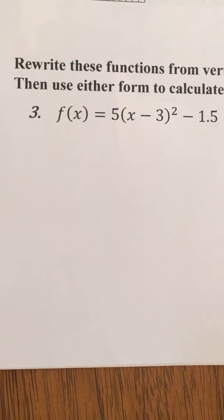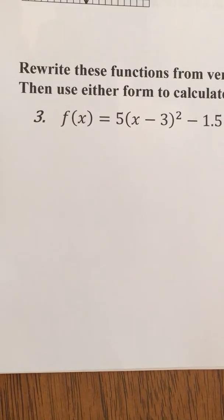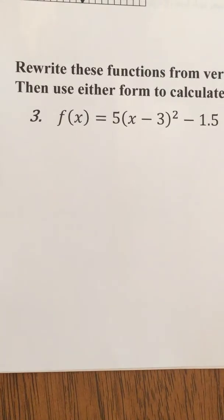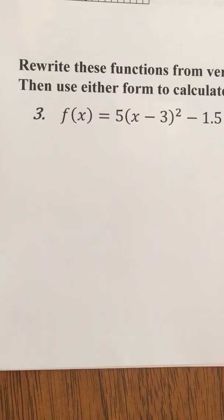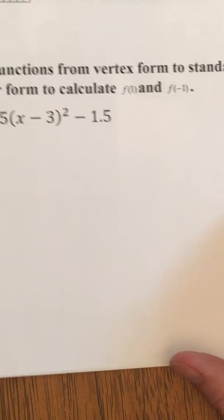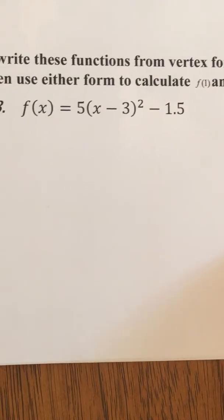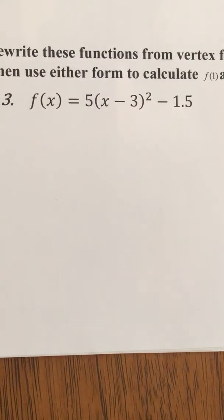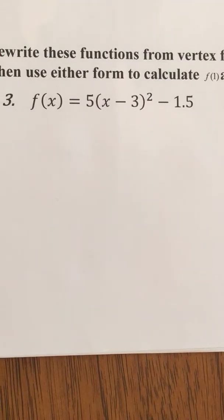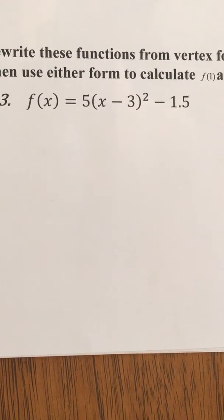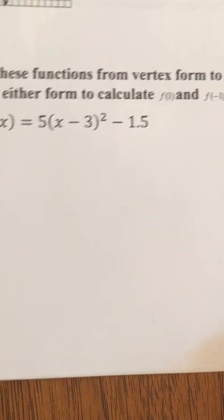Welcome back to problem number 3. Here in problem number 3, we are instructed to rewrite these functions from the vertex form into the standard form. So they gave us one. We got to go get the other one. Thanks. We're also going to use our calculator to find a value of f of 1 and f of negative 1. Okay. Let's go see what we need to do to get started.